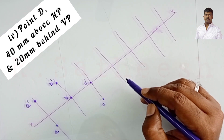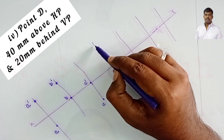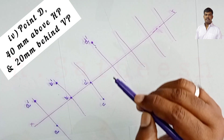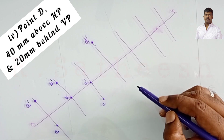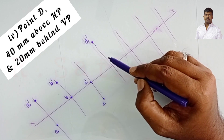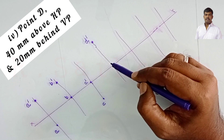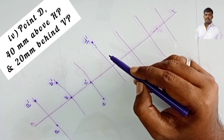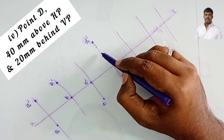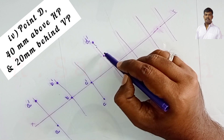Point D is 40 mm above HP and 20 mm behind VP. Above HP means above XY, so the front view D dash is 40 mm above XY. Behind VP in the second quadrant means the top view is also above XY. So 20 mm behind VP — that point is the top view of D, also above XY.